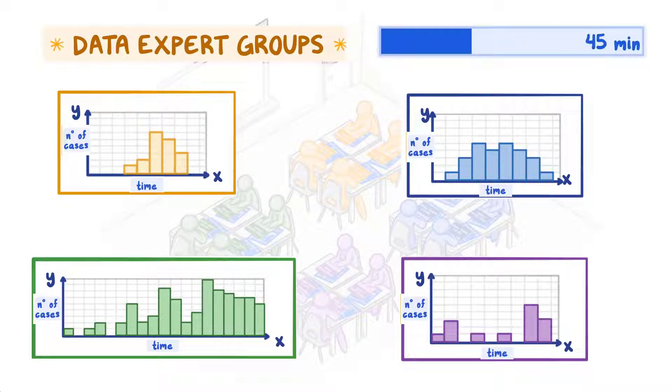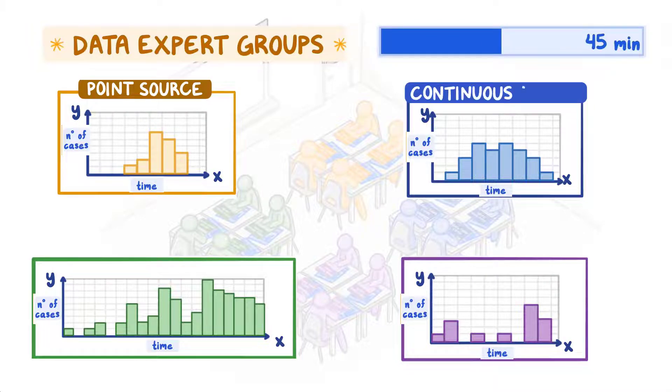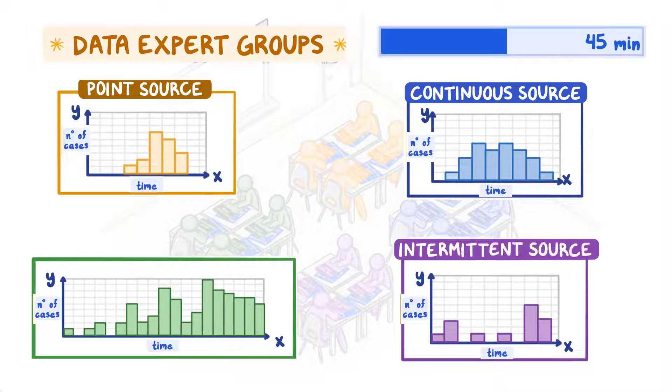Have data expert groups interpret their epi-curves to identify the pattern: point source, continuous common source, intermittent common source, or propagated.